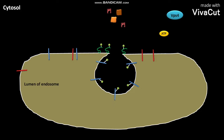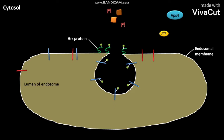In the cytosol of the cell, the endosomal membrane has HRS proteins. Each of these HRS proteins is attached with ubiquitin. In the endosome,